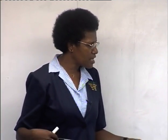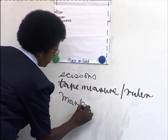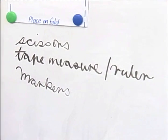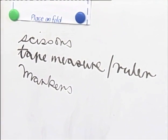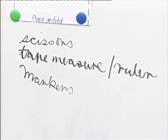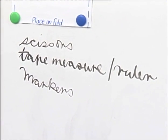Any other equipment we use besides scissors, tape measure and ruler? Markers. We use markers, pen, pencil, to mark out whatever is needed on the pattern as well.